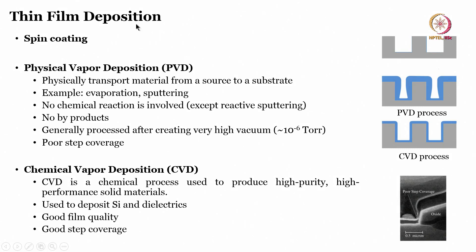There are two different categories: thin film deposition and thick film deposition. Screen printing, as used for greeting cards, is considered thick film technology. For thin film deposition we have spin coaters, physical vapour deposition, and chemical vapour deposition. With PVD, pits on the surface may not be fully covered due to a shadowing effect, whereas with CVD the gas reactants react with all parts of the pit, ensuring complete step coverage.